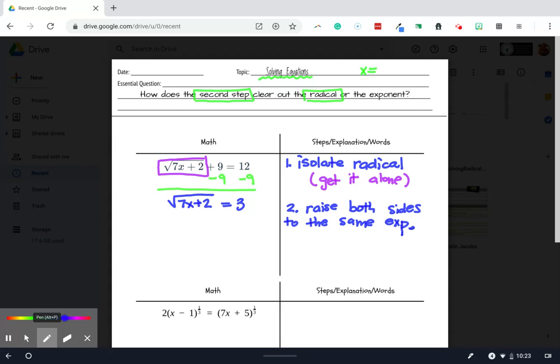So since this is a square root, it has an index of 2, I'm going to raise both sides up to a 2.